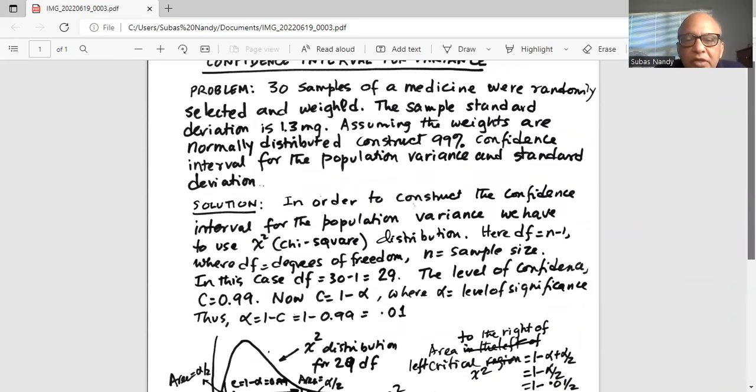In order to construct the confidence interval for the population variance, we have to use chi-square distribution, written as chi-square but pronounced as chi-square, where degrees of freedom is n minus 1, sample size minus 1.